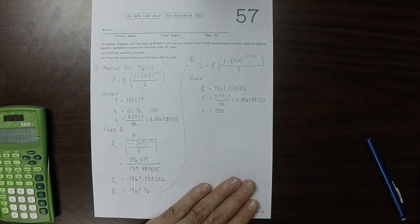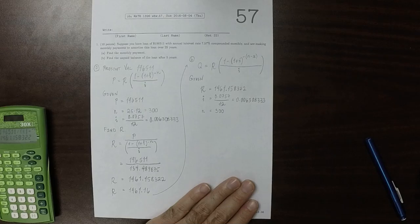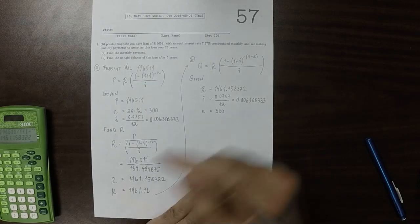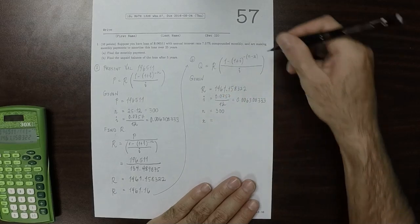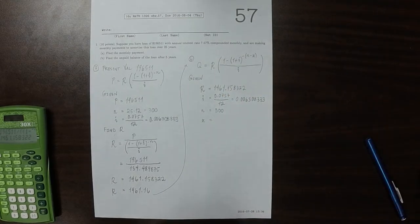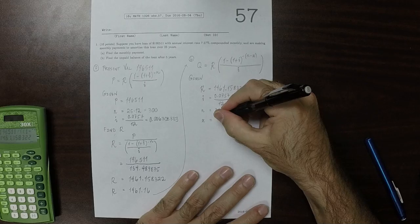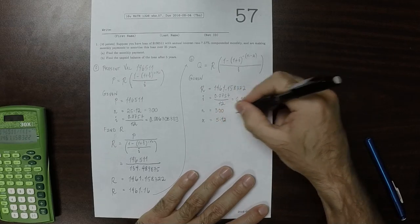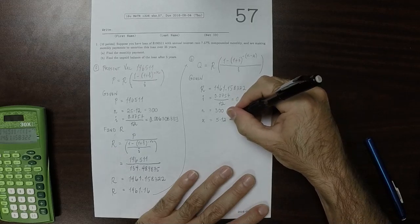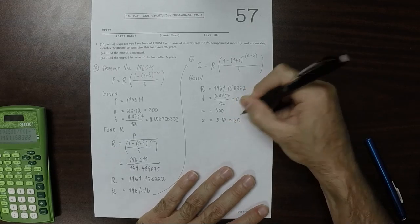Find the unpaid balance of the loan after five years. So that's x. That's that new x in the formula. There's been five years of payments. So that's five years multiplied by 12, because there were 12 payments per year, is 60.